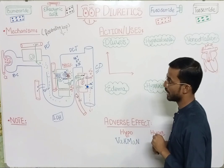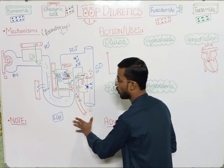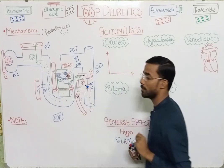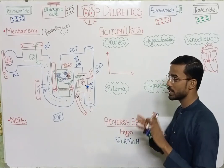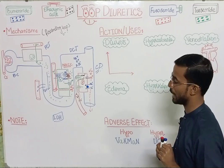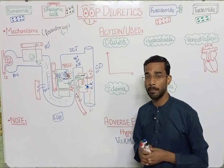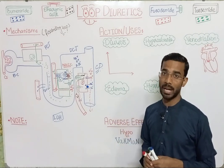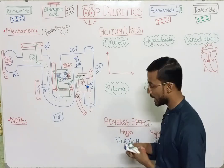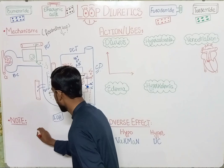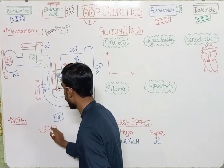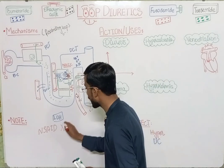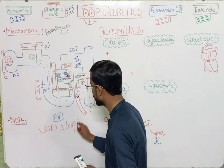The main action is on the ascending loop of Henle and indirectly affects different downstream mechanisms. This is the mechanism of loop diuretics.